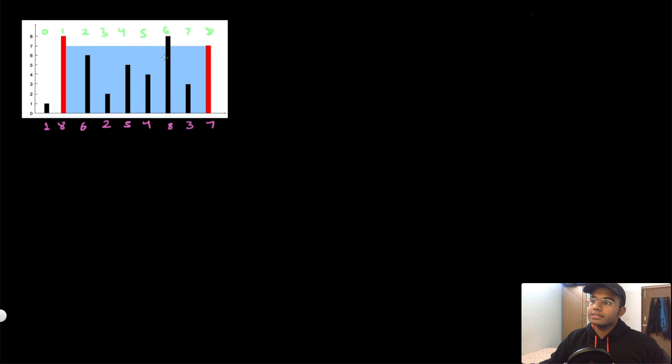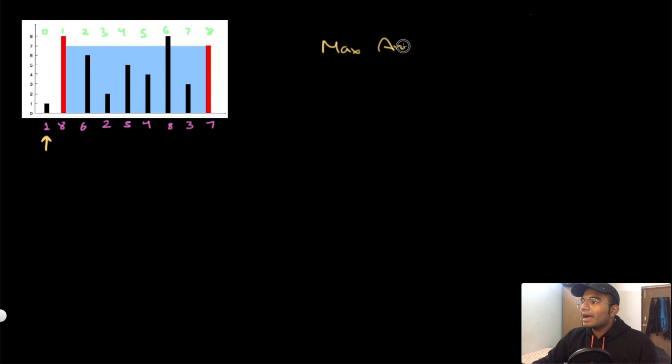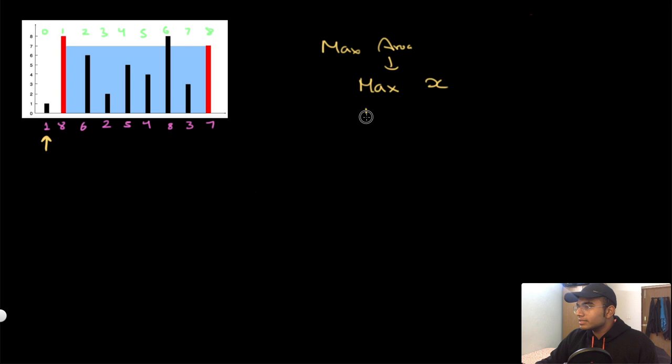The first thing I want to look at is this diagram. The goal is to maximize the area. Maximizing the area is the same as maximizing the x-distance and maximizing the y-distance, and the y-distance is nothing else but the height. These are the two things we want to maximize.